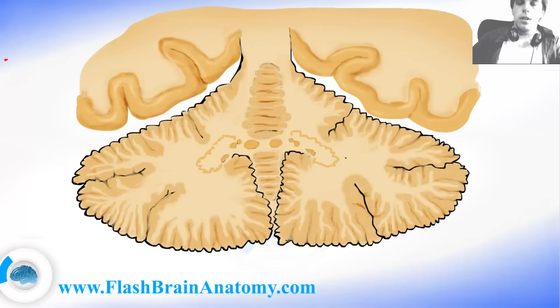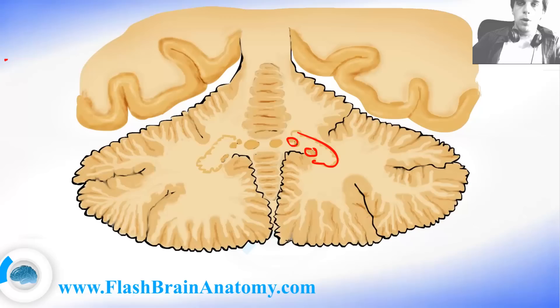We have the dentate nucleus here, the emboliform nucleus here, this is the globose nucleus, and this is the fastigial nucleus.